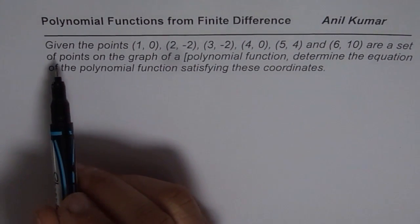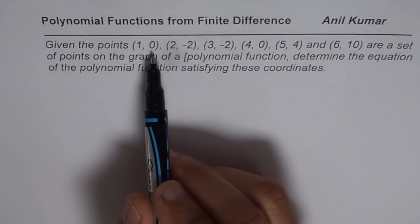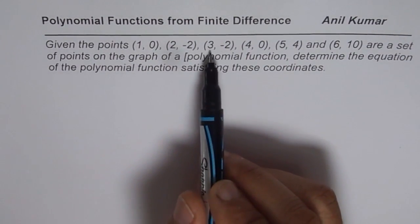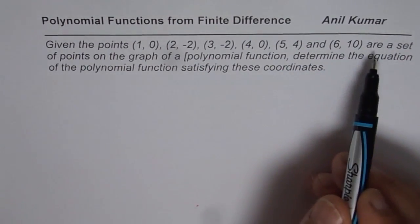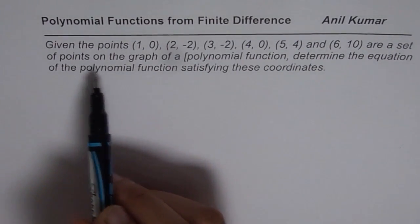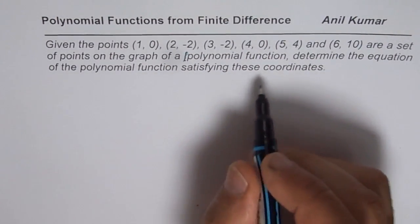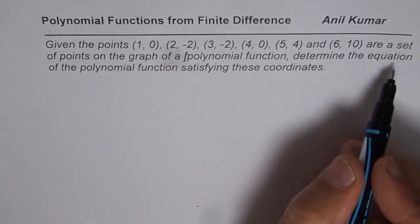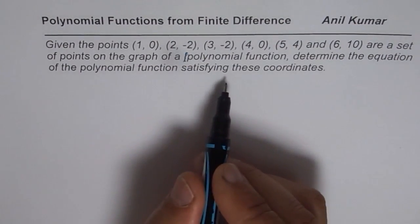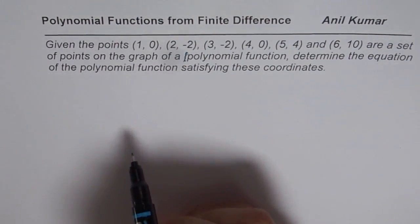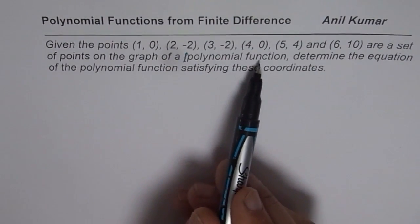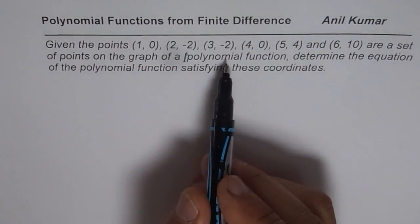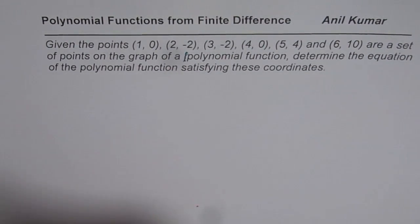The question here is, given the points (1, 0), (2, -2), (3, -2), (4, 0), (5, 4), and (6, 10) are a set of points on the graph of the polynomial function. Determine the equation of the polynomial function satisfying these coordinates. So we are given that these points are on the graph of a polynomial function, and we need to find equation of this polynomial function.